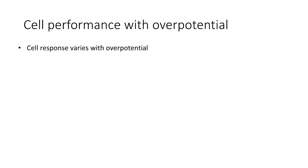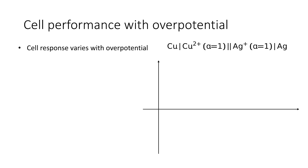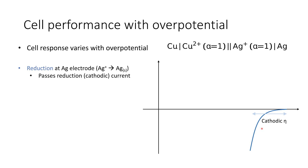A key factor in galvanic cell performance is the effect of the overpotential. Whenever we apply an overpotential to a cell we get a different cell response. With our copper-silver galvanic cell, we would expect reduction at the silver electrode, giving a cathodic overpotential — a cathodic current running for a given cell potential — while oxidation at the copper electrode drives an anodic current. The overall current, as with Butler-Volmer, is the sum of the reduction and oxidation currents.